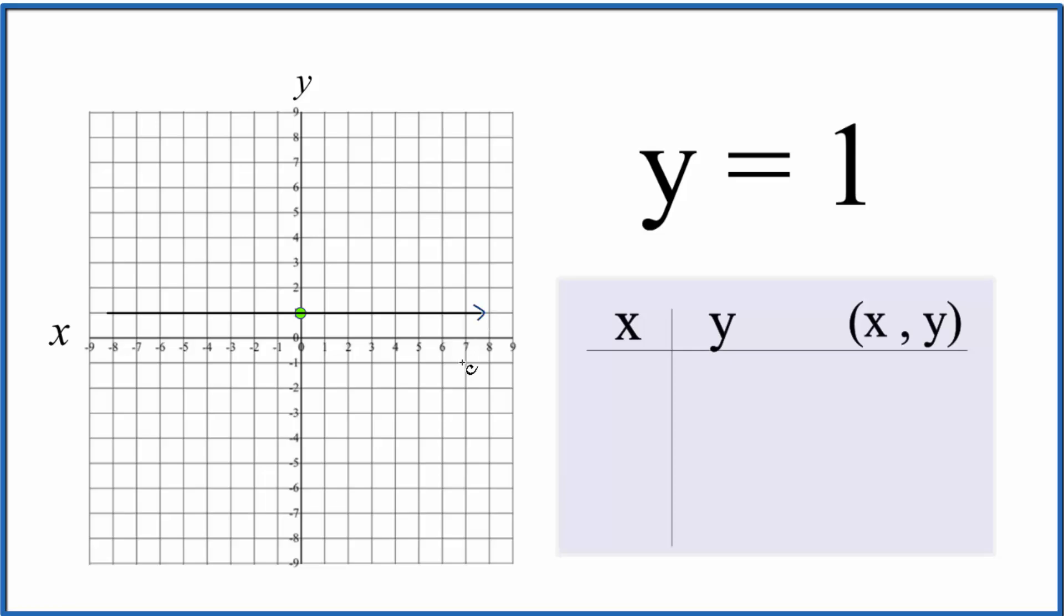Put some lines on either side, and that's our graph for y = 1. What this means is that for any value of x, y is always going to equal 1.